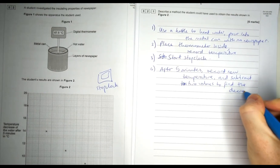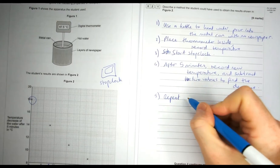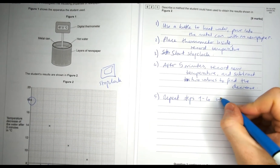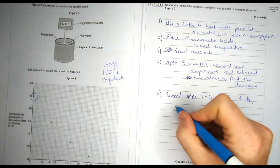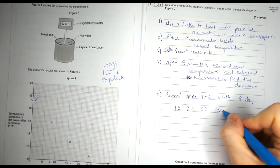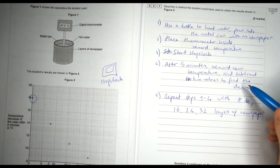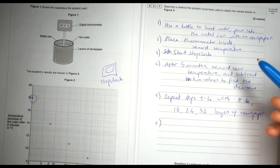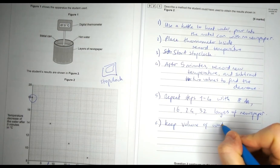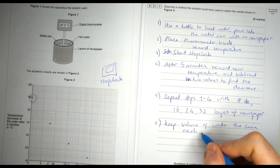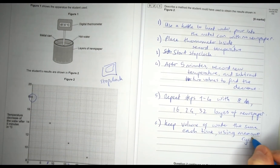That method covers one can, giving the first point on the graph. Repeat the steps with eight layers of newspaper, then 16, 24, and 32 layers. The question only asks how to get the data, not what to do with the results. A good control variable to mention is keeping the volume of water the same each time — use a measuring cylinder for that, which is better than a beaker.